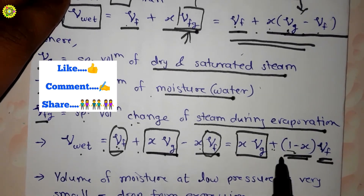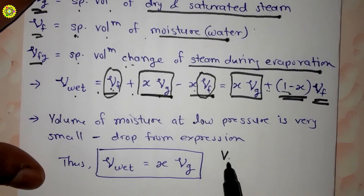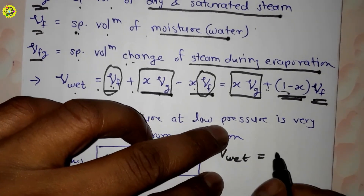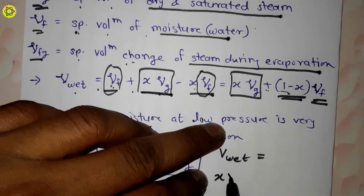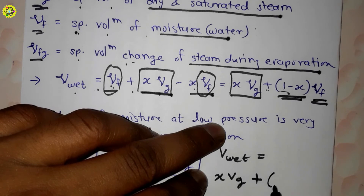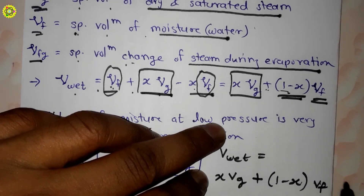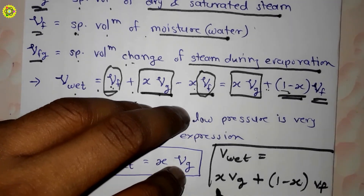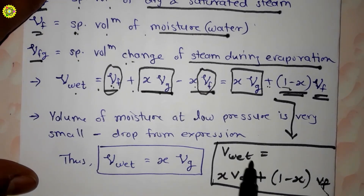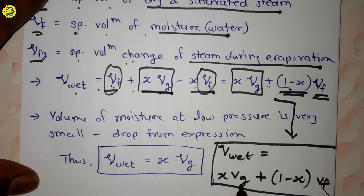The equation becomes: v_wet is equal to x·vg plus (1 minus x)·vf.